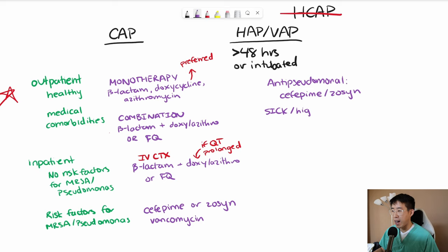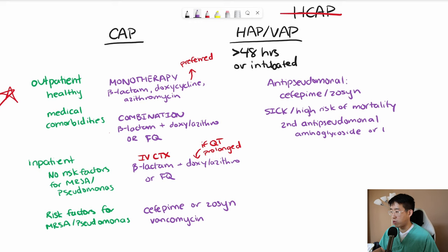If a patient is sick or high risk for mortality, then you should add on a second anti-pseudomonal and also add MRSA coverage as well. Typically for the second anti-pseudomonal, it's going to be an aminoglycoside, so you're getting a separate mechanism of action, or a fluoroquinolone. So aminoglycoside like amikacin or gentamicin or fluoroquinolone. And then MRSA coverage would be with vancomycin.